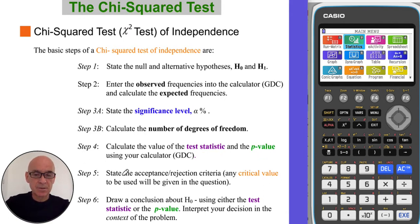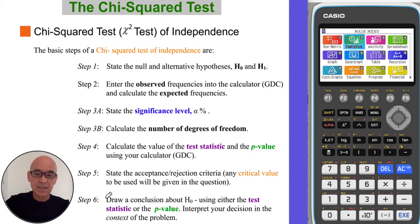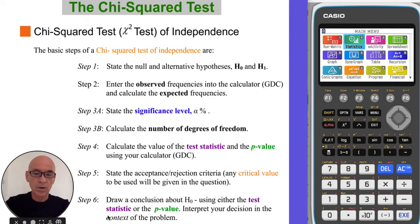The fifth step is to state the acceptance and rejection criteria, and any critical value used will be given in the question. And finally, step six is to draw our conclusion. To draw our conclusion we either use the test statistic or the p-value.